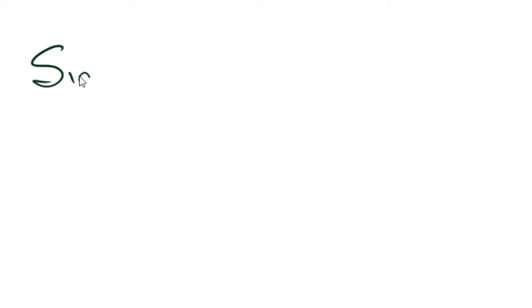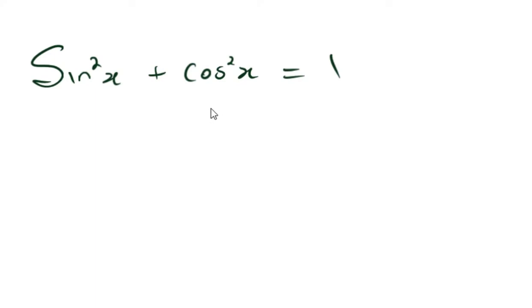The first identity that you have to remember is sine squared x plus cos squared x equals 1. This is very important in answering questions. You need to understand that the x could be variants of different things — it doesn't necessarily have to always be x or theta. It could be any value, as long as you notice there is a squared sine, a squared cos, and an addition between them. The value you get will always be 1.